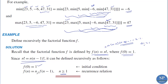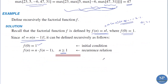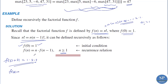This is the initial condition and this is the recursive relation — together they form the recursive definition of the factorial function. For example, if we need to find f(3), we know f(3) = 3! = 1 × 2 × 3. Using the recurrence relation, f(3) = 3 × f(2).